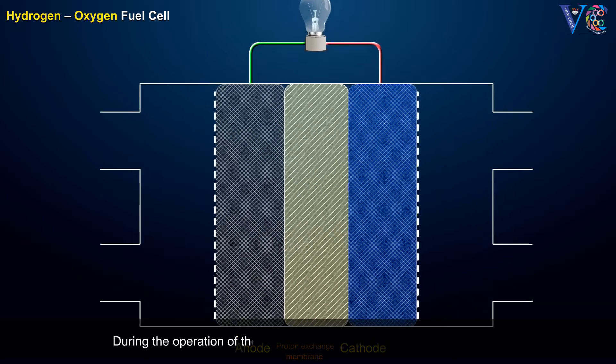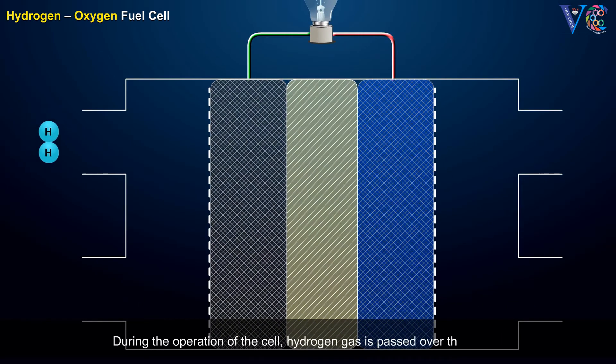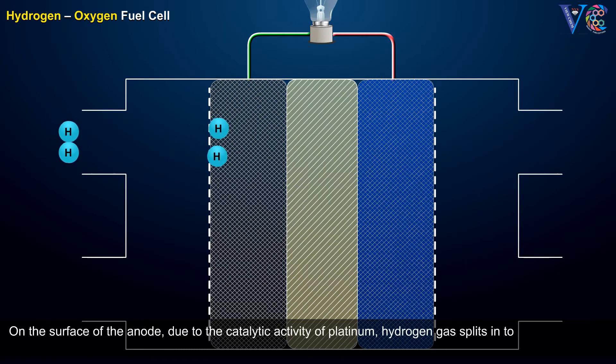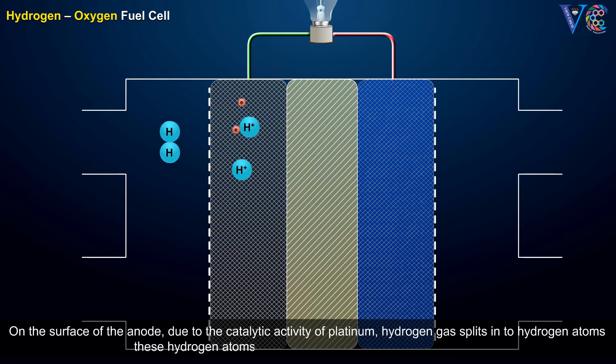During the operation of the cell, hydrogen gas is passed over the anode. On the surface of the anode, due to the catalytic activity of platinum, hydrogen gas splits into hydrogen atoms. These hydrogen atoms undergo oxidation, liberating electrons.